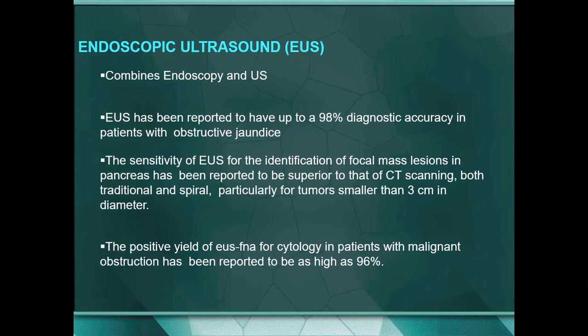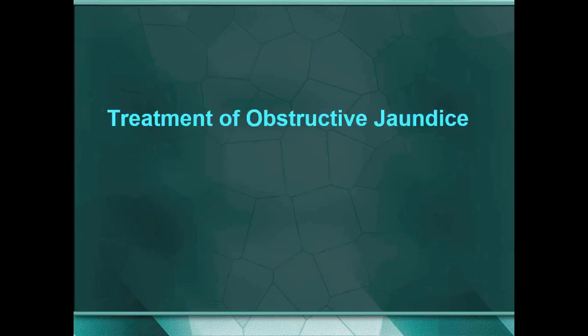Endoscopic ultrasound is a recent modality combined with endoscopy. Endoluminal ultrasound has been reported to have up to 98% diagnostic accuracy in patients with malignant obstructive jaundice. The sensitivity of endoscopic ultrasound for identifying focal mass lesions in the pancreas has been reported to be superior to that of CT imaging. The positive yield of endoluminal ultrasound for cytology in patients with malignant obstruction has been reported to be as high as 96%.